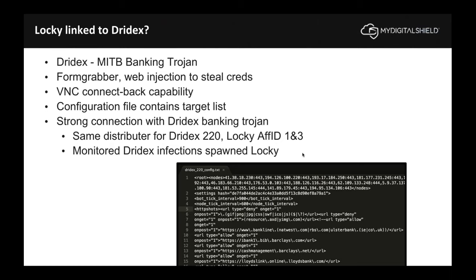Locky shares very similar code and methodologies with a banking trojan called Dridex, which was popular in 2014 and 2015. Dridex would insert itself between the browser and banks, throw an SSL warning people would click through, and collect banking credentials. Somewhere near the end of 2015, the Dridex authors realized compromising bank accounts was getting more difficult, especially with multi-factor authentication, and it would just be easier to get victims to send money directly. So they shifted gears, making Dridex a prime distributor of Locky ransomware, with an affiliate ID model.